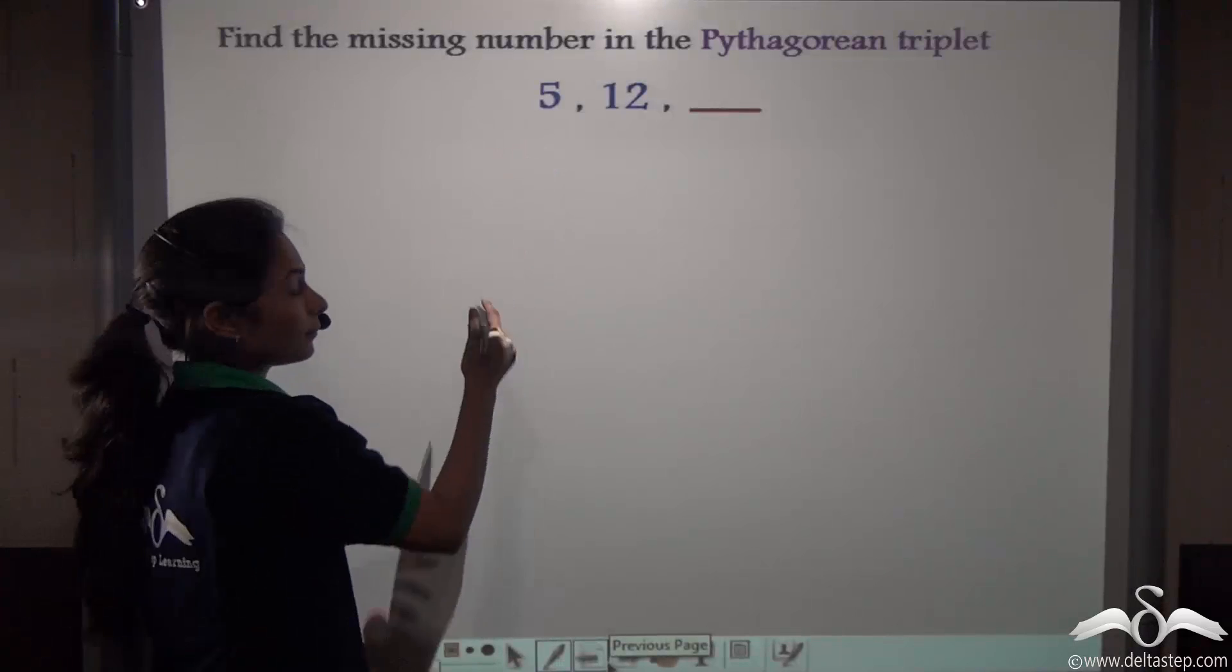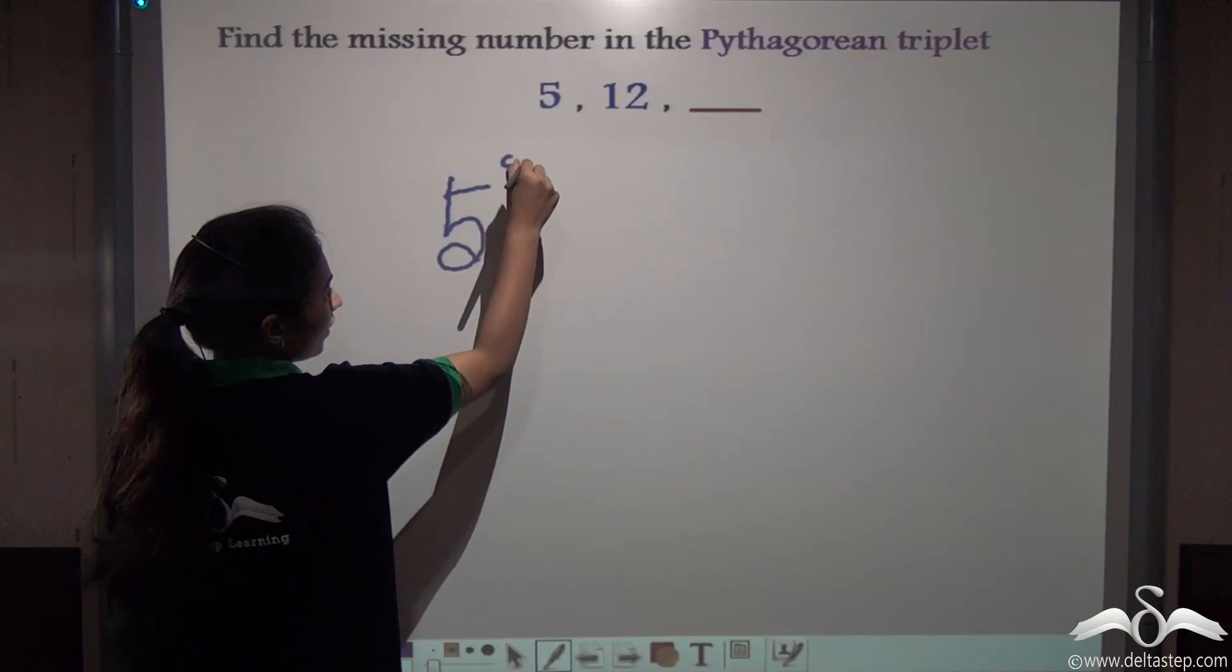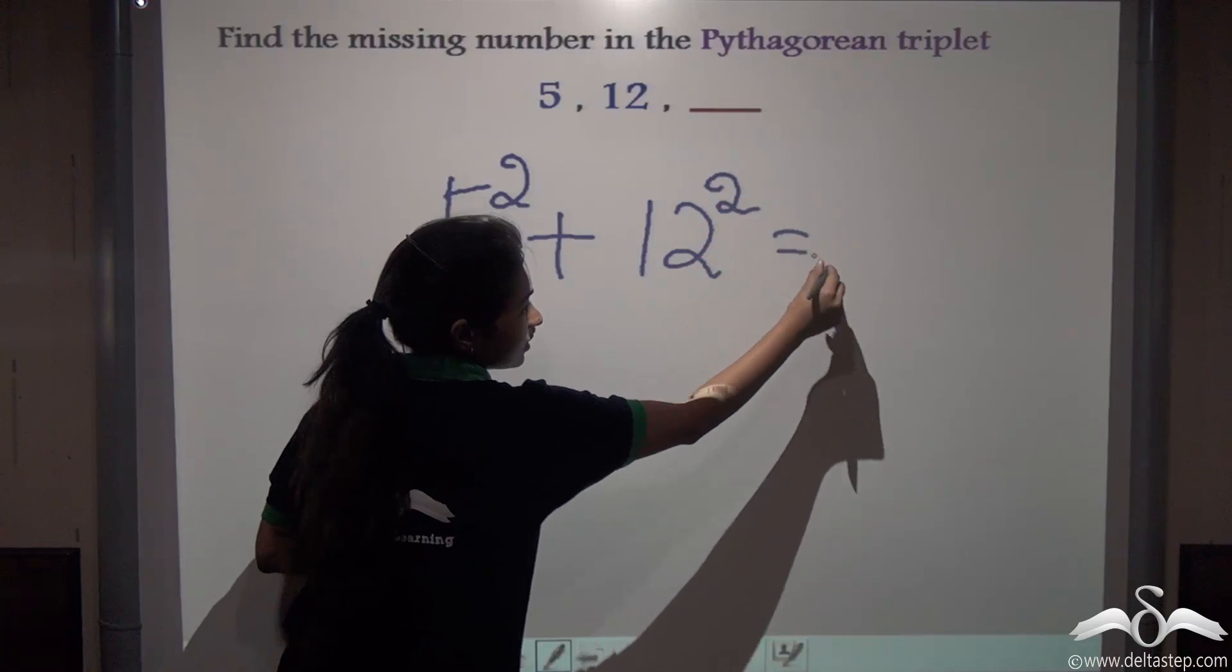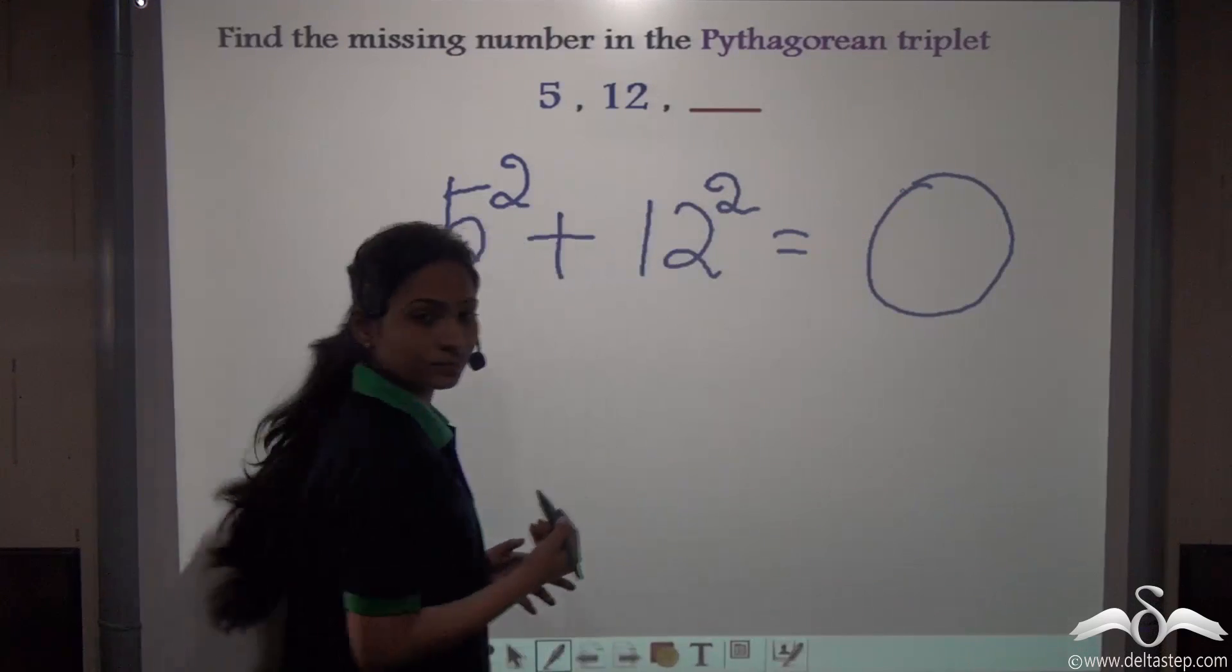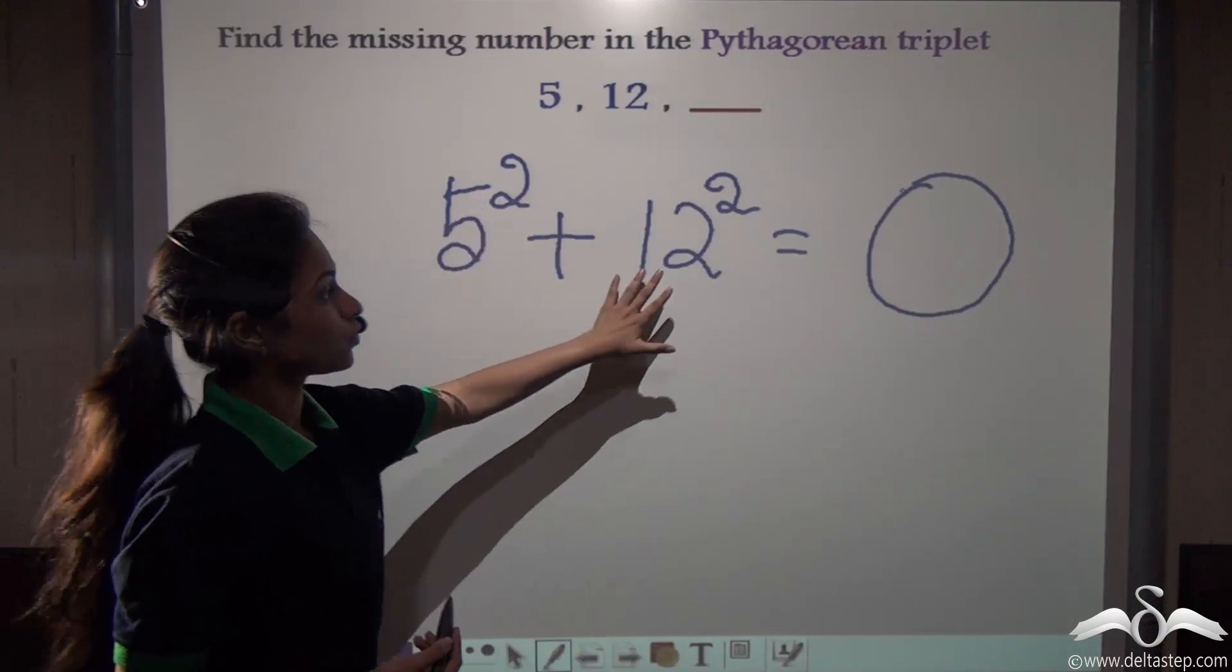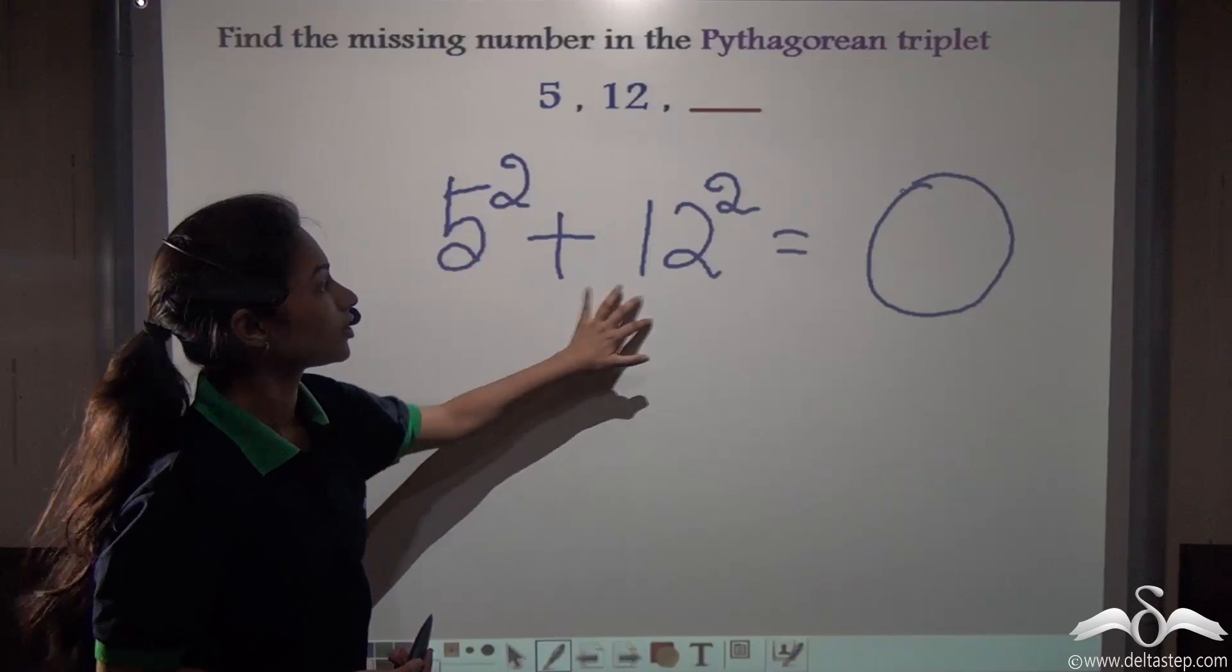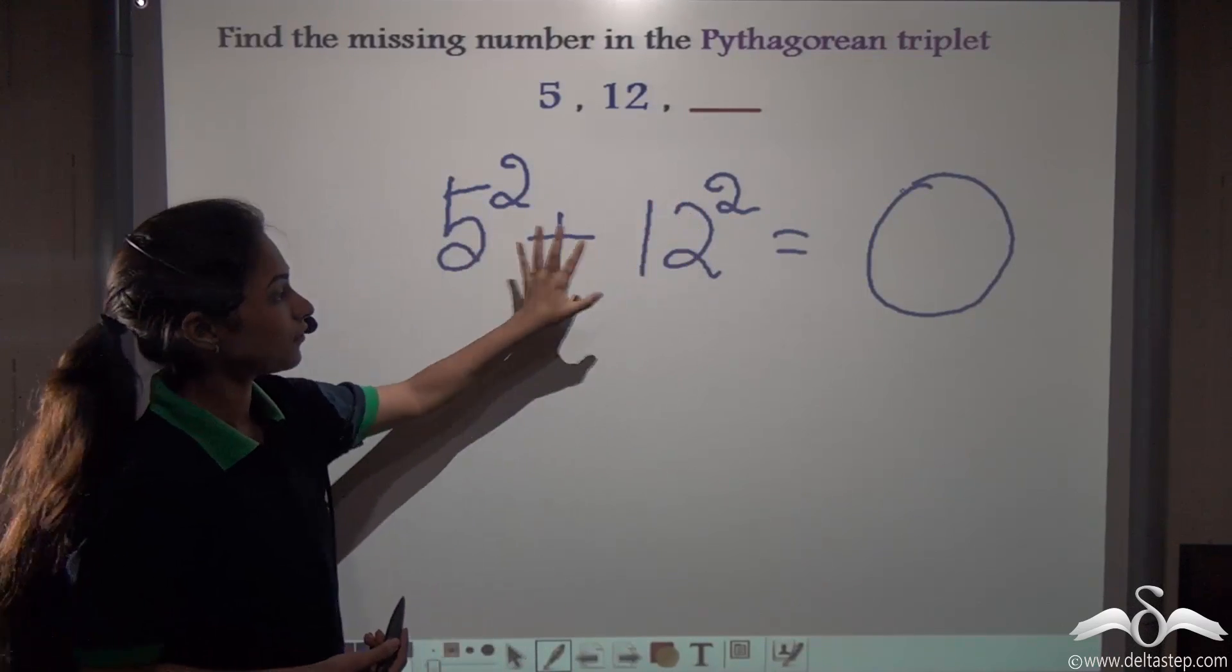Let us start squaring them. So 5 squared plus 12 squared will give us such a number whose square will be equal to the addition of these two squares. So let us find this out.